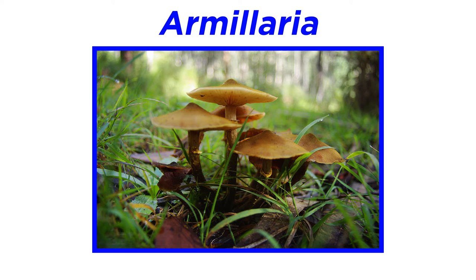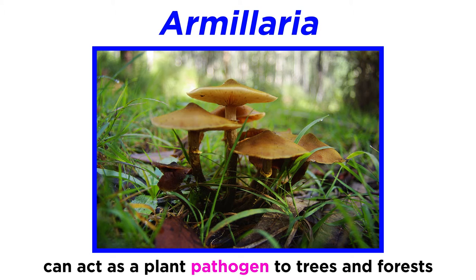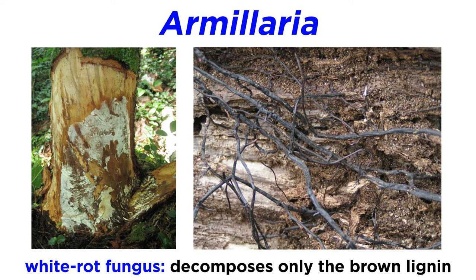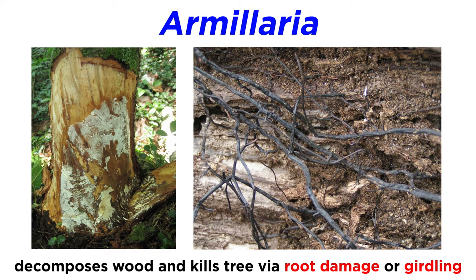Besides Armillaria's potential use as an ingredient, it acts as a plant pathogen to trees and forests worldwide. It can be quite debilitating to an ecosystem because of its mechanism of colonization and effective dispersal strategies. Armillaria is a white rot fungus, so it decomposes the brown lignin in wood, leaving only the white cellulose. It will begin decomposing the wood of a living tree and kill it by causing extreme root damage or girdling the tree, which destroys the bark along the entire circumference of the tree.